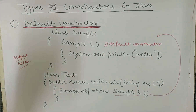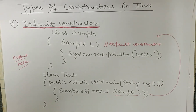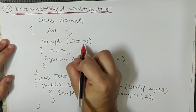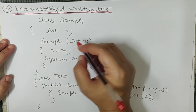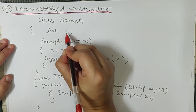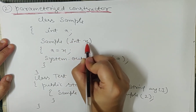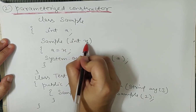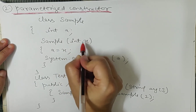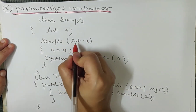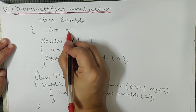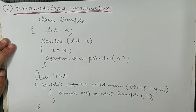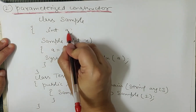So that is the default constructor. Next is the parameterized constructor. The difference between a default constructor and a parameterized constructor is that in the parameterized constructor, we can pass parameters. In this class, I have made a variable 'int a', and in the constructor I have passed parameter 'int x'. Then I set 'a = x'. Here 'a' is my instance variable and 'x' is my constructor parameter, used to initialize the instance variable at the time of object creation.